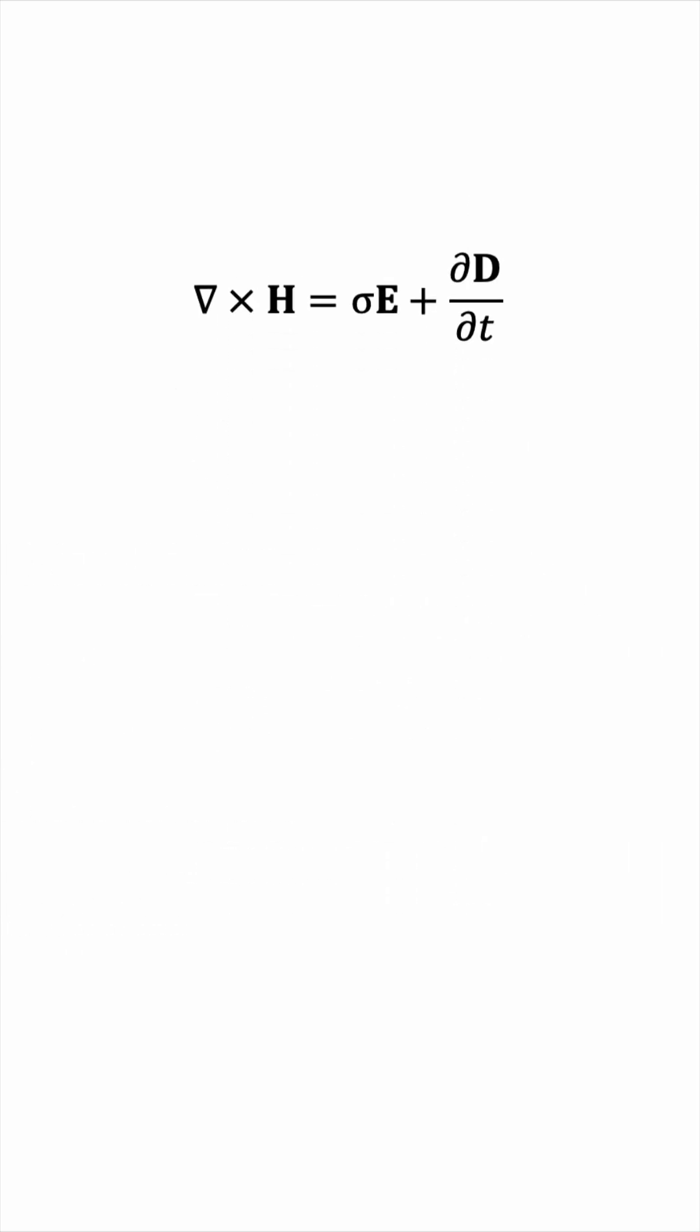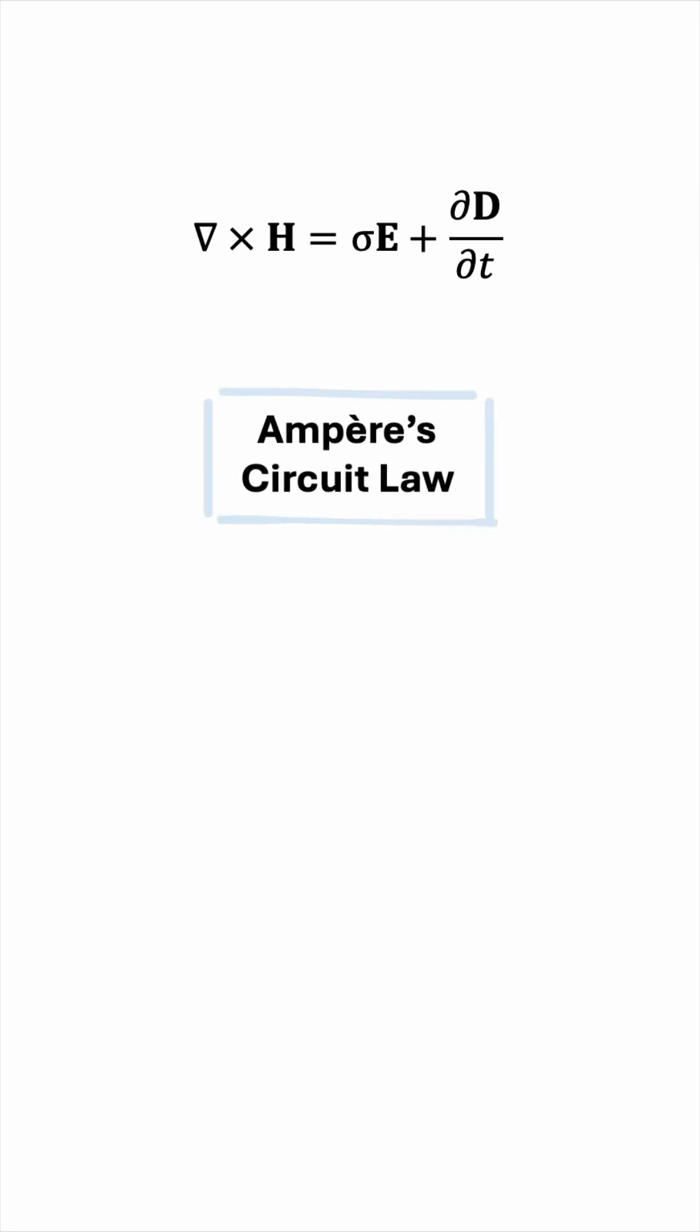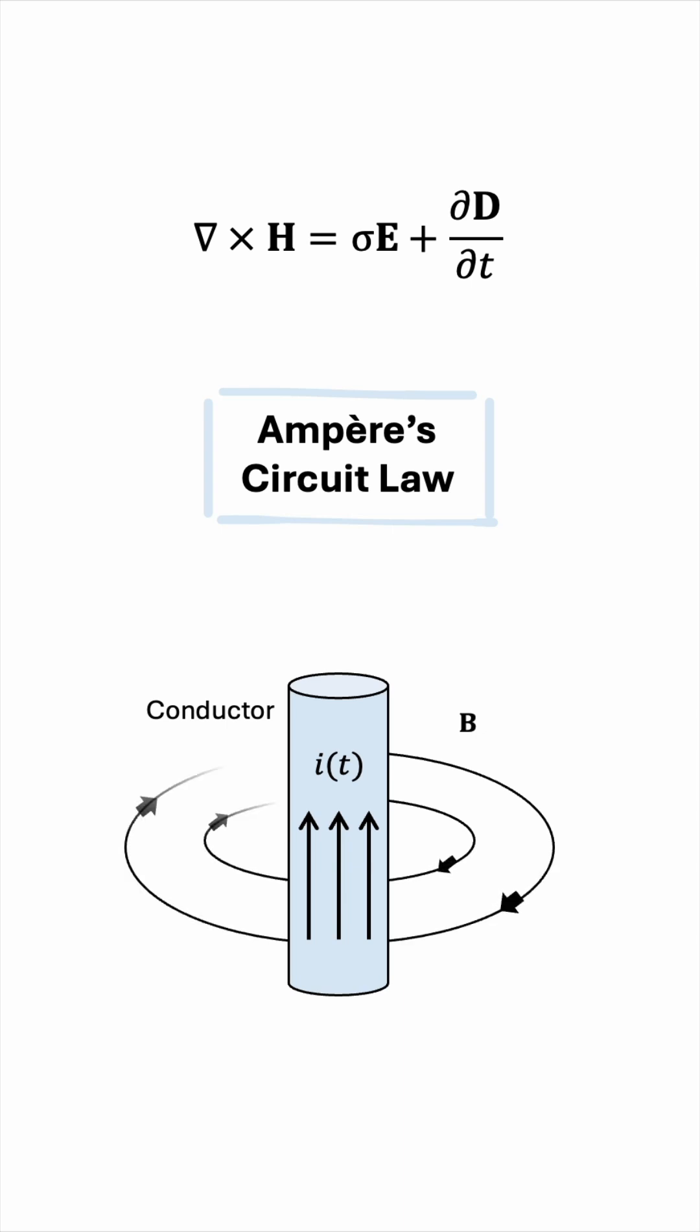The last equation is an extension of Ampere's circuit law, and it's basically the opposite of Faraday's law. It says that a changing electric field produces a magnetic field. For example, if we start with a conductor carrying alternating current, then this will produce a magnetic field around this conductor.